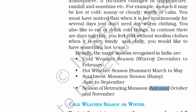Winter spans from December to February, summer spans from March to May, rainy comes from June to September, and then autumn comes from October to November.